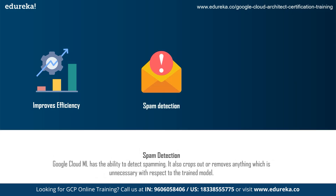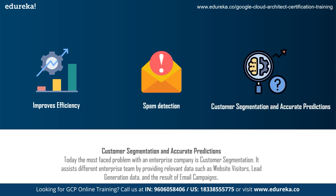Then we talk about spam detection. Google Cloud has the ability to detect spamming — it crops out or removes anything which is unnecessary with respect to the trained model. Then we talk about customer segmentation and accurate predictions. The most common problem faced today by enterprise companies is customer segmentation. Different enterprise teams provide relevant data such as websites and lead generation, and the result is a segmentation of what people want — that is how you divide customers based on their needs.